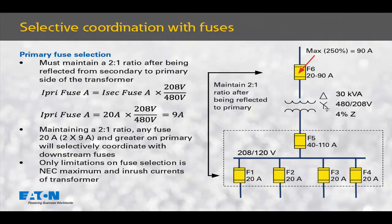We get this number by multiplying 20 amps by the secondary voltage and dividing that by the primary voltage of the transformer. To maintain a 2-to-1 ratio, the primary fuse, fuse F6, has to be greater than or equal to 2 times the reflected fuse current value. The secondary fuse reflected to the primary is 9 amps; multiply that by 2 and we get 18 amps. The next fuse size is 20 amps, so fuse F6 can be a 20 amp fuse or greater, up to the maximum permitted by the National Electrical Code, which is 90 amps.